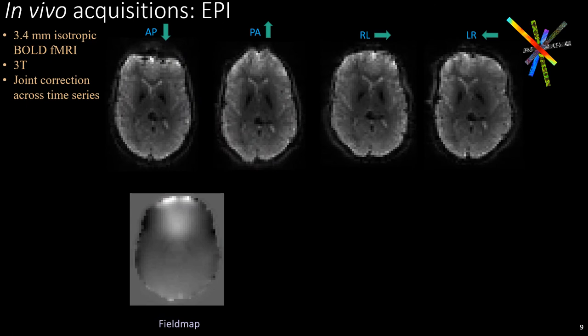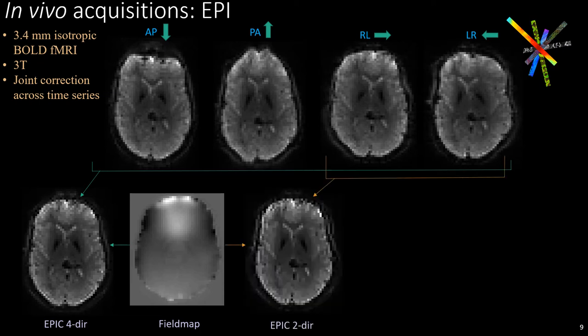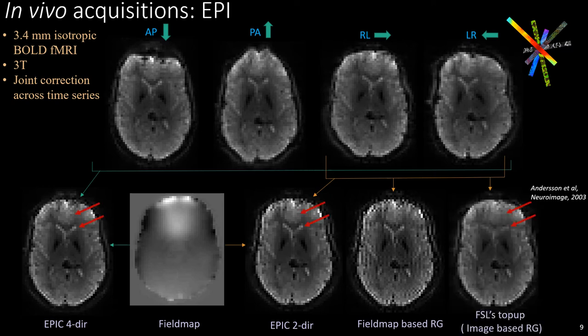For the first result, we correct EPI distortions in fMRI time series data. We have data with four phase encoding directions and a field map, and show results at a single time point. We assume that the time series images share the same anatomical edges and correct them jointly using EPIC. EPIC can accept all four phase encoding directions together and correct successfully. It can also correct the typical two-polarity reverse gradient scan, using both field map and image constraints, making it better posed and more accurate than a pure field map based method, and less blurry than FSL's TopUp. The EPIC 4-direction gave the best result of all.